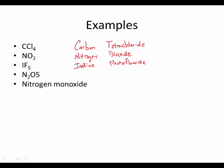Now N2O5. So it's 'dinitrogen' — two nitrogens — and penta with oxygen. You have to be careful: it's 'pentoxide,' not 'penta-oxide,' because that would be an AO combination. So the answer is dinitrogen pentoxide. We take the vowel off the prefix, not off the oxygen, because we still need to be able to tell it's oxygen.